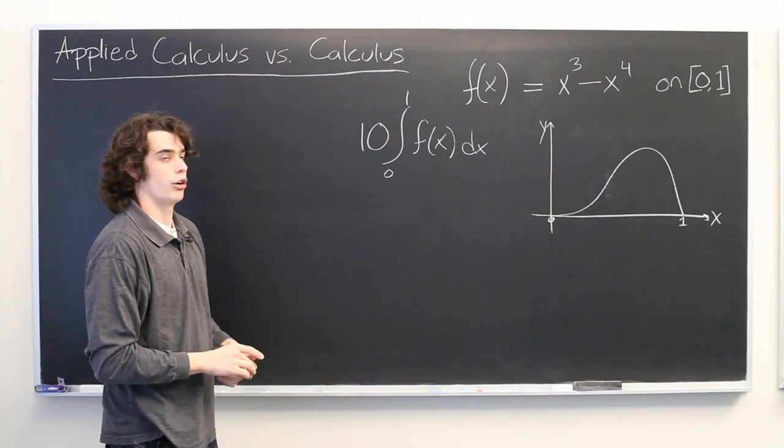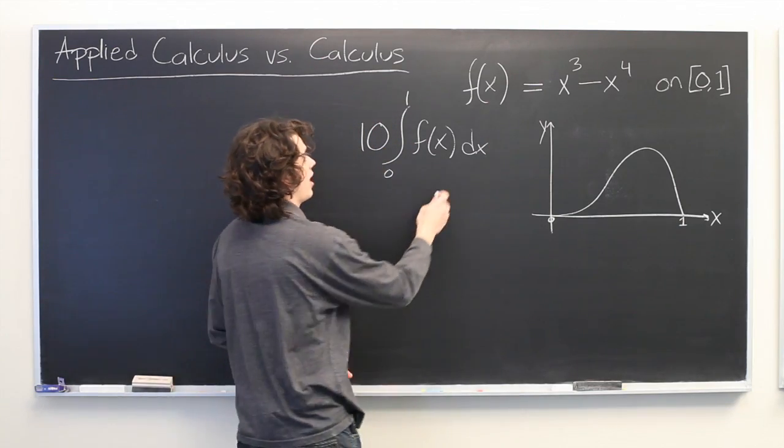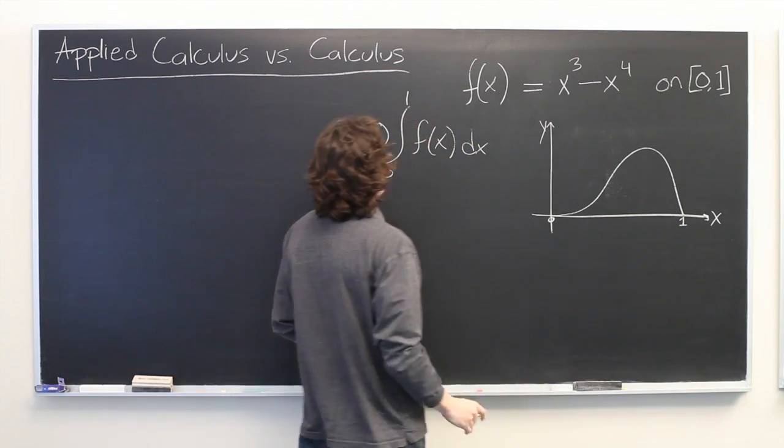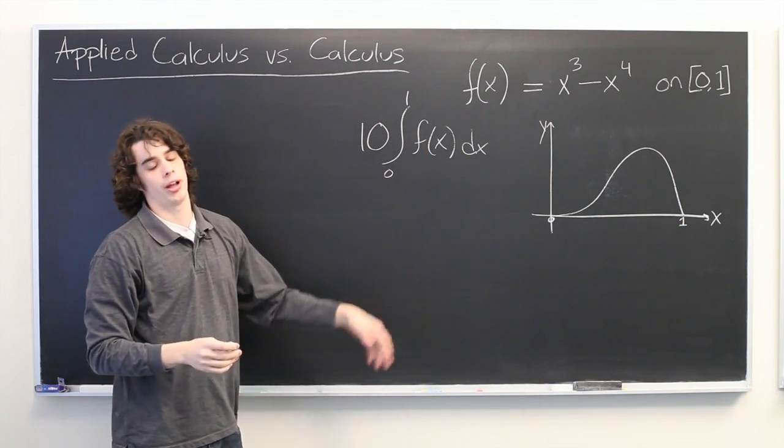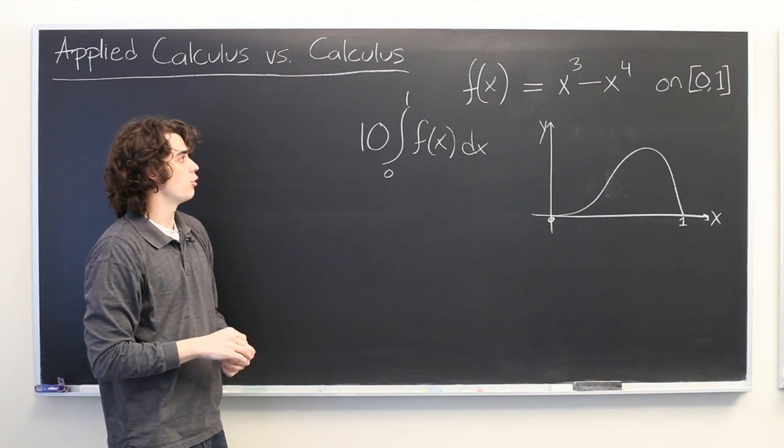And it wouldn't be particularly hard to compute this. We just find the antiderivative of this function, evaluate it at 1 and at 0, subtract the 2, multiply the result by 10. Not an unusual problem.